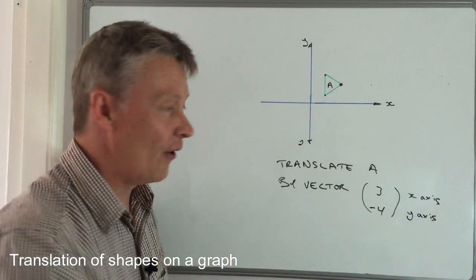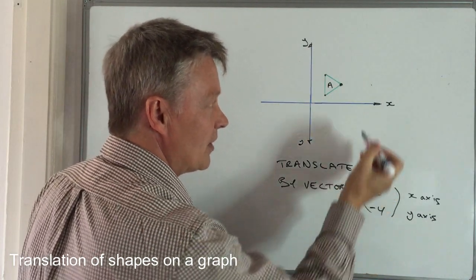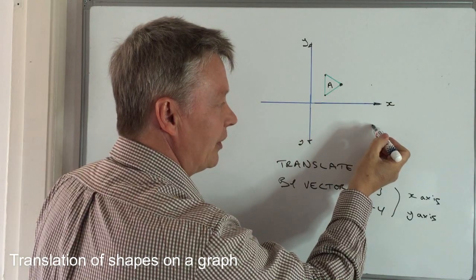So it's going to drop this point down 4 units to something like that. So what was here has now moved and translated by the vector of positive 3 and then negative 4.